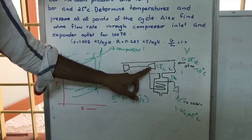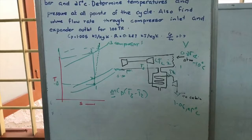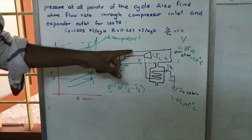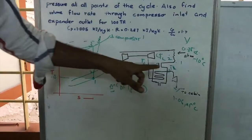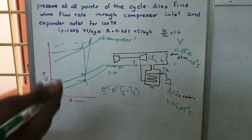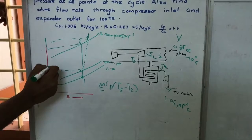From state 3-dash, the process 3 to 4 is heat exchange. In heat exchanging, we are expecting the temperature T3-dash to be reduced to T2. But that is not happening in practice; the temperature coming out of the heat exchanger will be somewhat more than T2, so we call it T4.